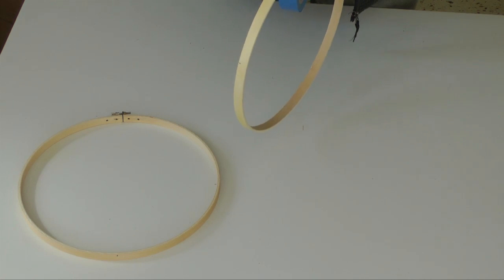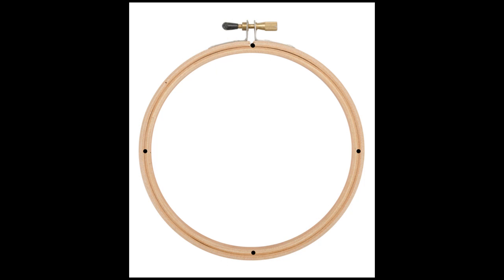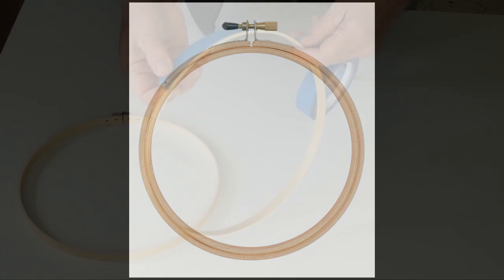Next we need to mark four locations, 90 degrees apart on each hoop. There are a number of ways to do this. Here's one.